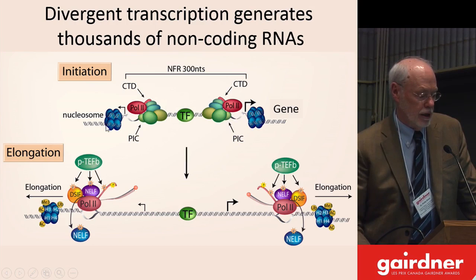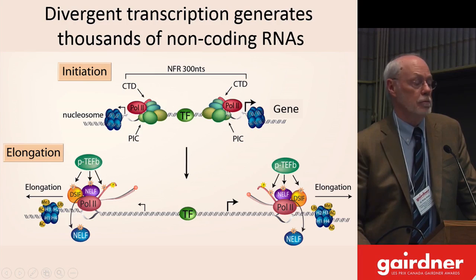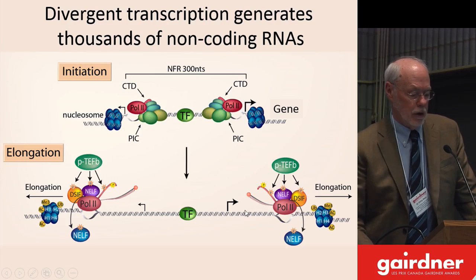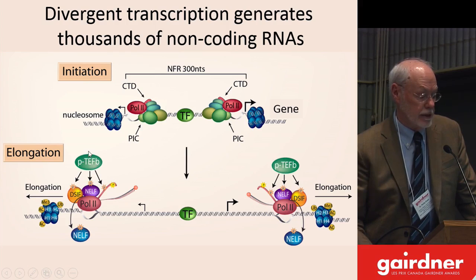These polymerases can be the machines that move nucleosomes around. After initiation, there is pausing of the polymerase at something like 50 to 70 nucleotides downstream. Then PTEF-B needs to work on negative factors in the carboxy-terminal tail of the polymerase to give elongation in the sense direction as well as in the antisense direction. So PTEF-B does control this process.